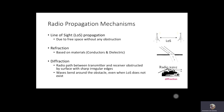Before we look at the fading classification, here are several propagation mechanisms common in the wireless channel. The first one is known as line-of-sight propagation, which occurs due to free space without any obstruction between the transmitter and the receiver. The second type is refraction.